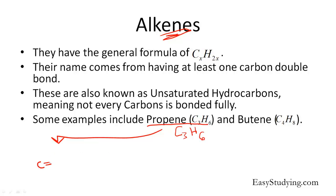The structure of propene is a carbon with a double bond to another carbon atom, and then another single-bonded carbon atom — three carbons total. Then there are six hydrogens surrounding the carbons. Remember that carbons can only form a maximum of four bonds. The double-bonded carbon already has two bonds, so we can only fit two hydrogens there. The middle carbon has three bonds, so we can only fit one hydrogen. The last carbon has three empty bonds, which we fill with hydrogens. Counting up, we have six hydrogens, three carbons, and one double bond.